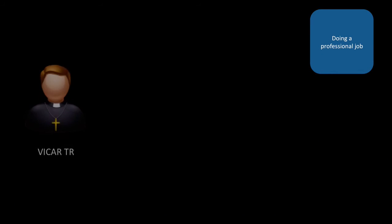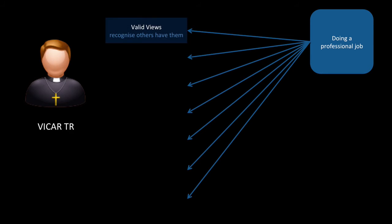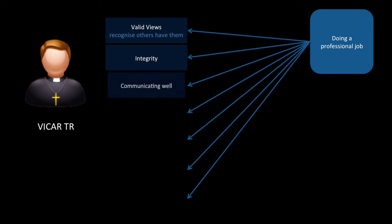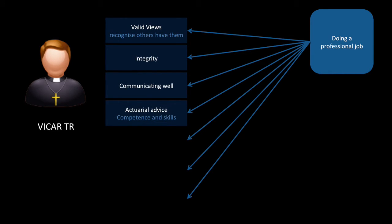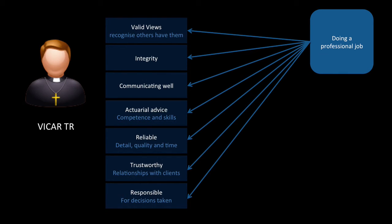Doing a professional job spells the acronym VICAR, then TR at the end. Think of a nice priest and the good qualities he'll have. He recognizes that others have valid views. He has integrity. He communicates well. He can give actuarial advice because he has the competence and skills. He is reliable when it comes to the detail, the quality, and the timeliness. He is trustworthy — he can build a strong relationship with clients. And he's responsible for the decisions that he makes.